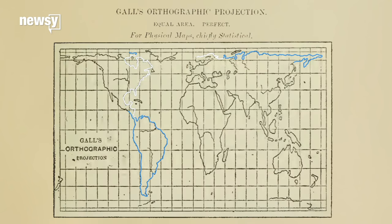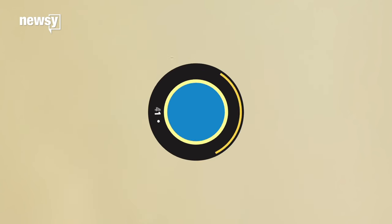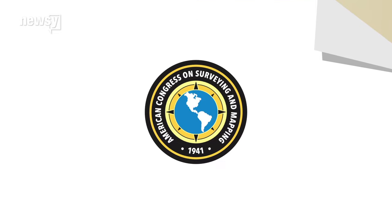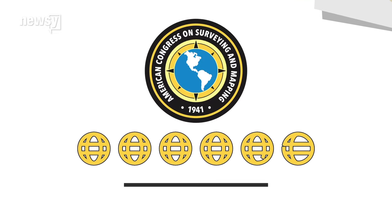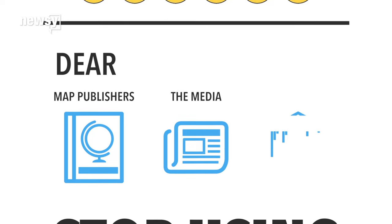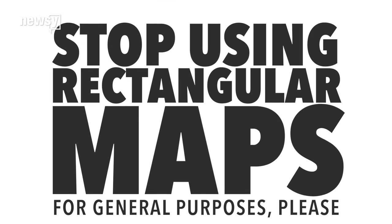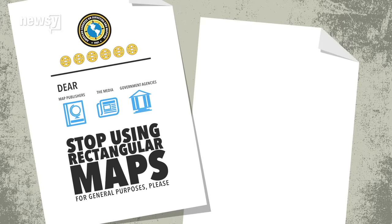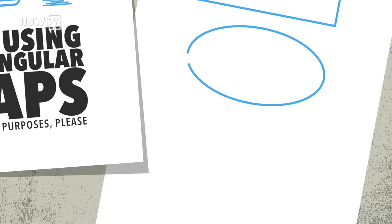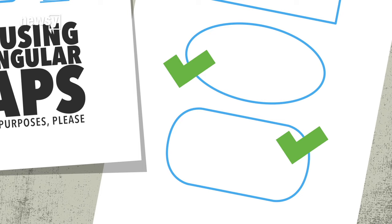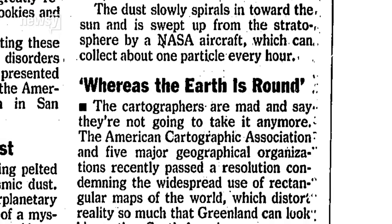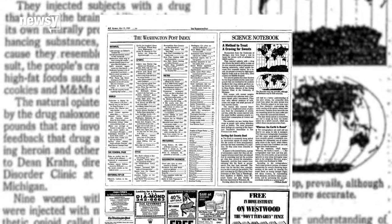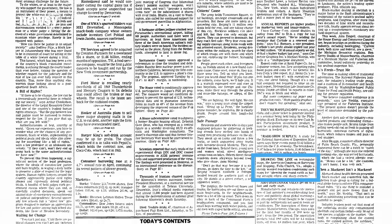A Scottish clergyman named James Gall had created virtually the same thing in 1885. Eventually, the American Congress on Surveying and Mapping stepped in with a resolution. The organization and six other cartographic groups urged map publishers, the media, and government agencies to stop using rectangular depictions like the Gall-Peters and Mercator for general purposes. The answer to the Greenland problem was not a new rectangular map, but instead non-rectangular projections like the Mollweide or the Eckert 4. The media picked up the resolution — there was a column in the Washington Post, and it even made the front page of the Wall Street Journal.